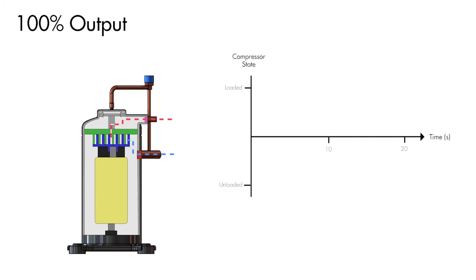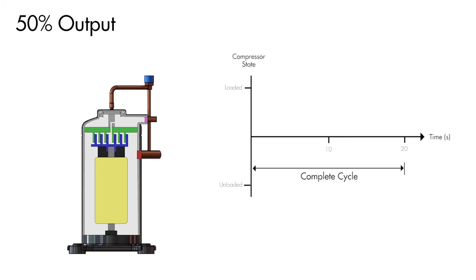But when the cooling load reduces to 50%, the compressor will toggle between the loaded and unloaded states over complete cycles of typically 20 seconds. So for 10 seconds the compressor will provide full capacity and then in the following 10 seconds it will provide no capacity.